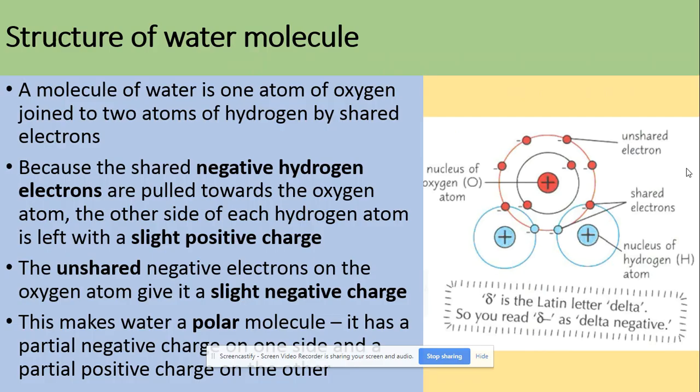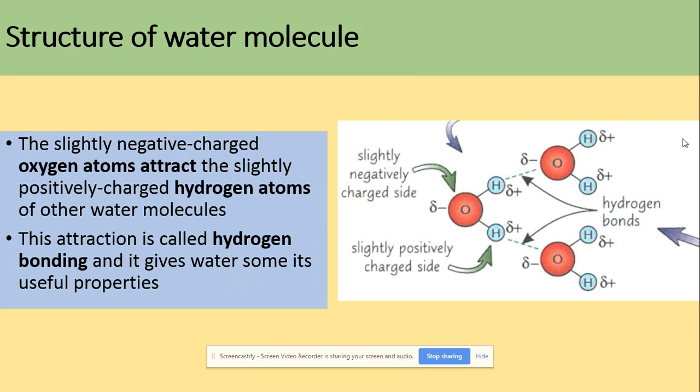A water molecule is made of one atom of oxygen joined to two atoms of hydrogen by shared electrons. Because the shared electrons are pulled towards the oxygen atom, the other side of each hydrogen atom is left with a slight positive charge. The unshared electrons on the oxygen atom give it a slight negative charge, making water a polar molecule — with a partial negative charge on one side and a partial positive charge on the other.